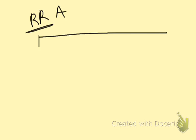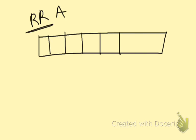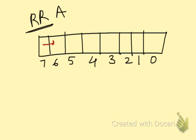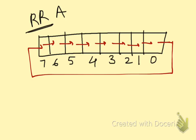Now let's look at the rotate right operation. You must have an idea how the rotate right operation works — it works in an absolutely similar manner with a change in direction. The register has bits seven, six, five, four, three, two, one, and zero. Seven goes to six, six goes to five, and so on. The data that is stored in the zeroth bit goes into the seventh bit.